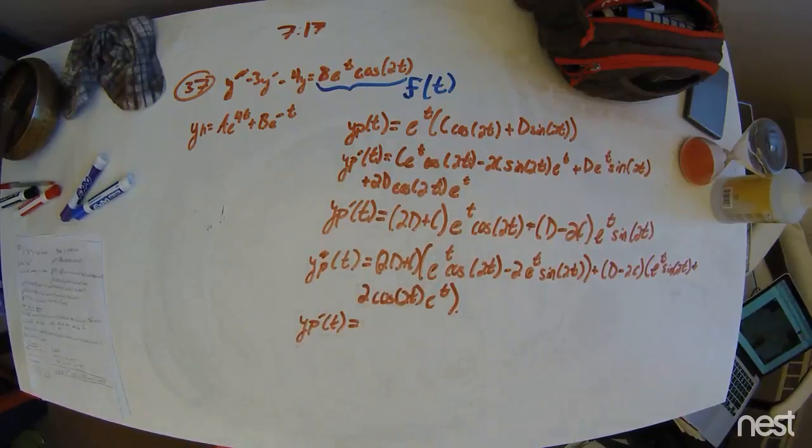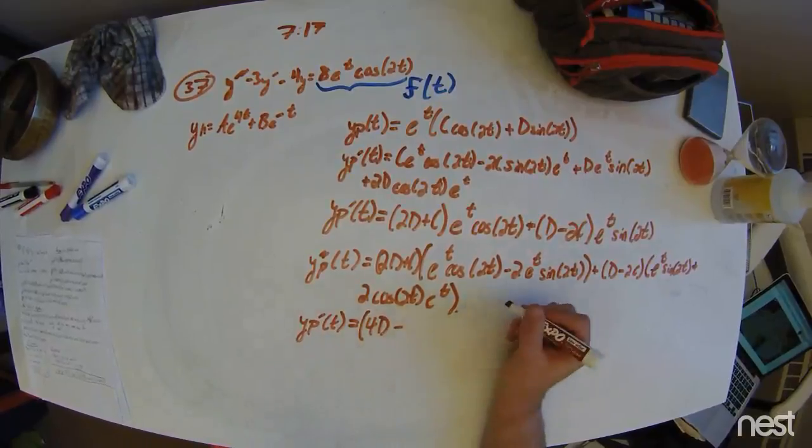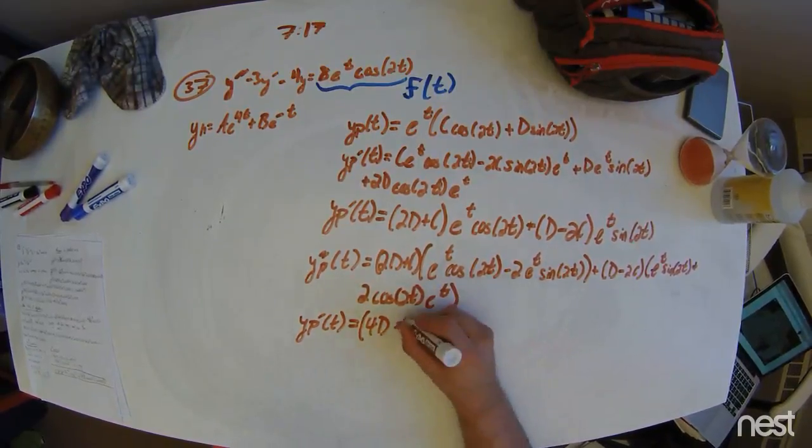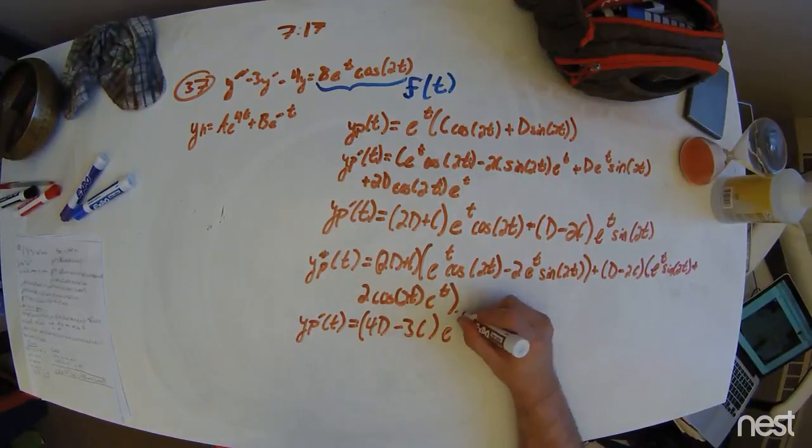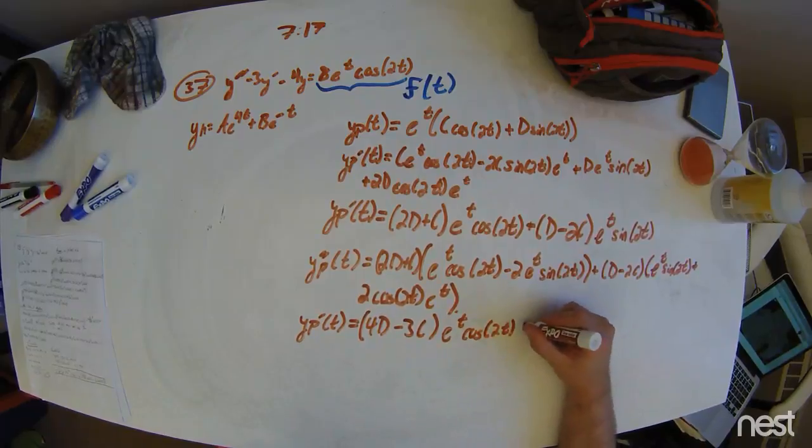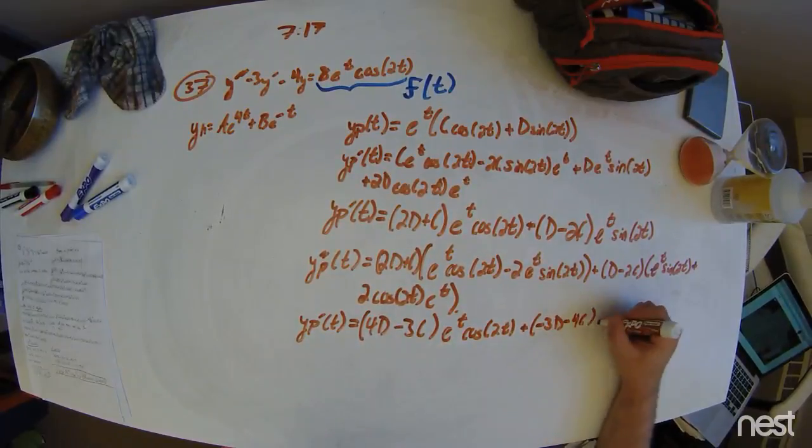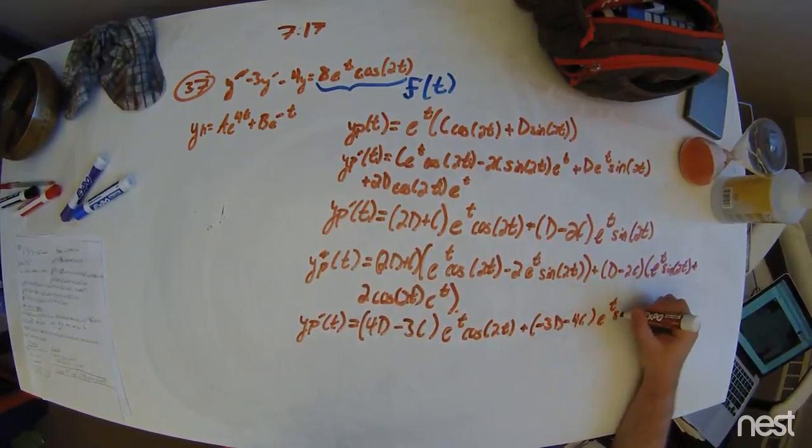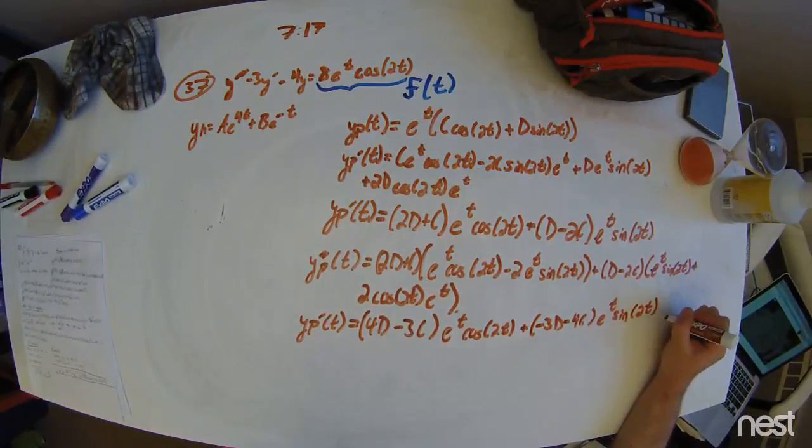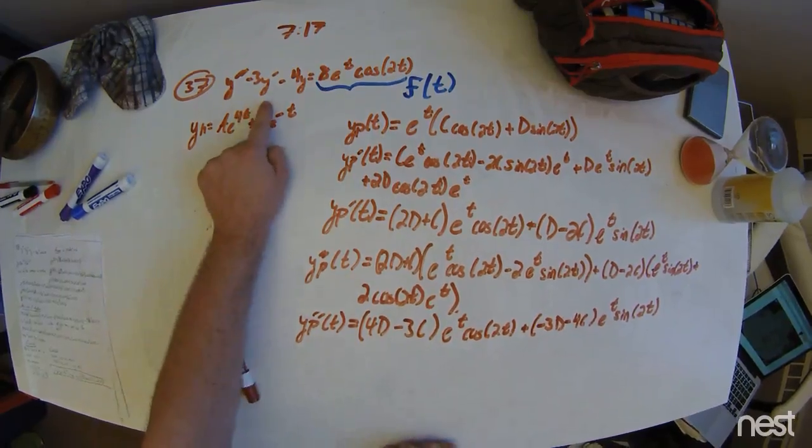After some algebra, you can simplify the coefficients multiplying e to the t times cosine of 2t and e to the t times sine of 2t. Plus negative 3d minus 4c times e to the t times sine of 2t.